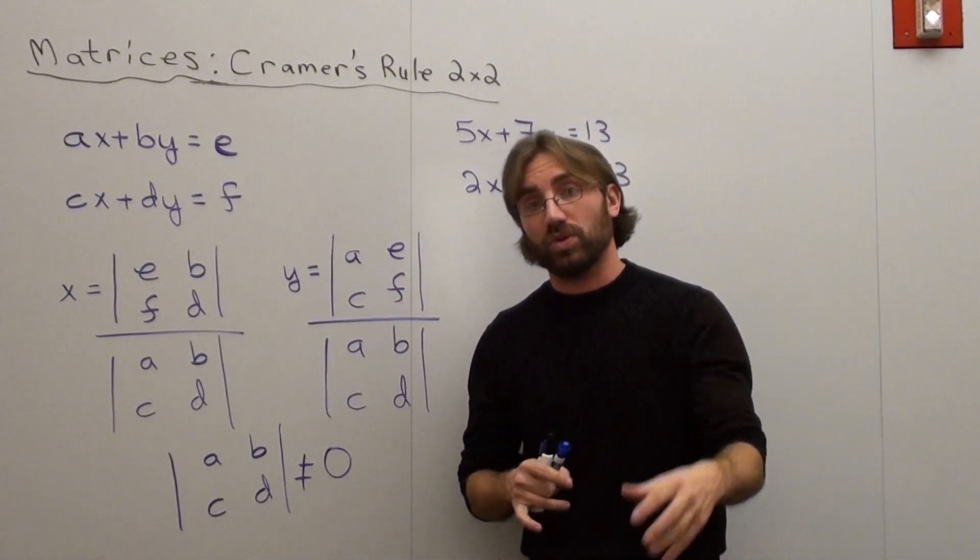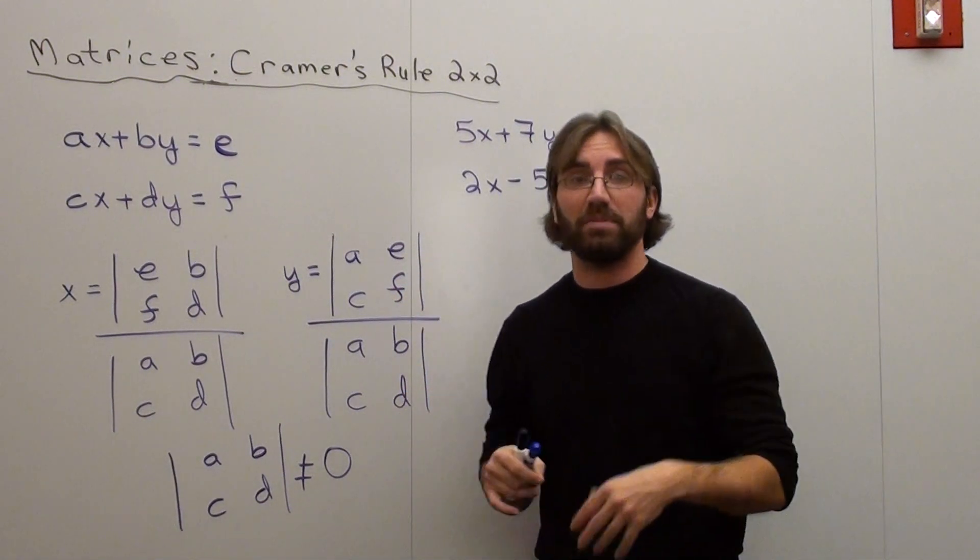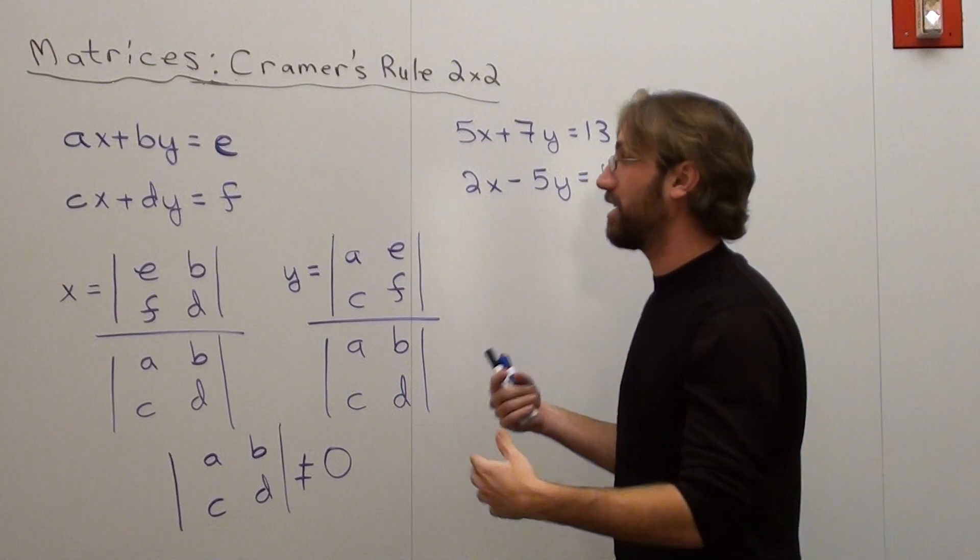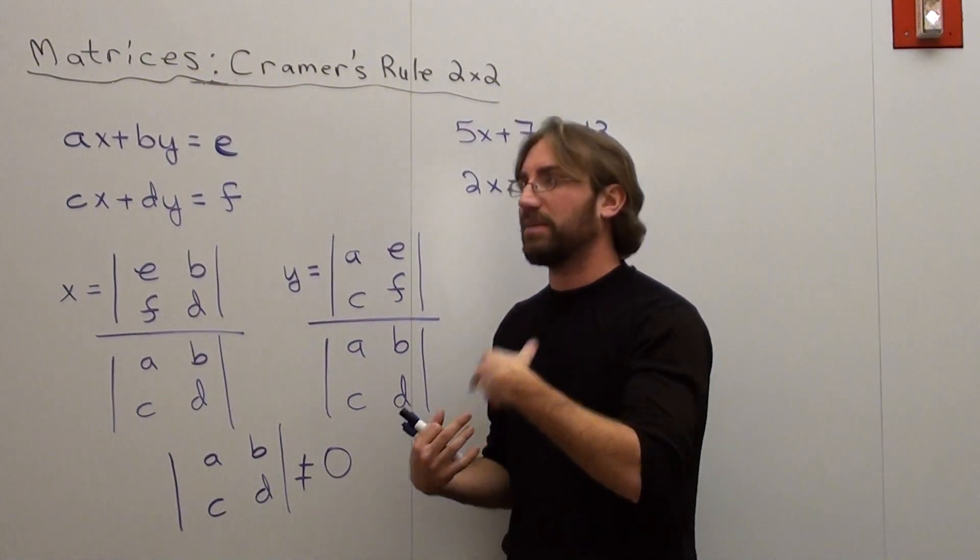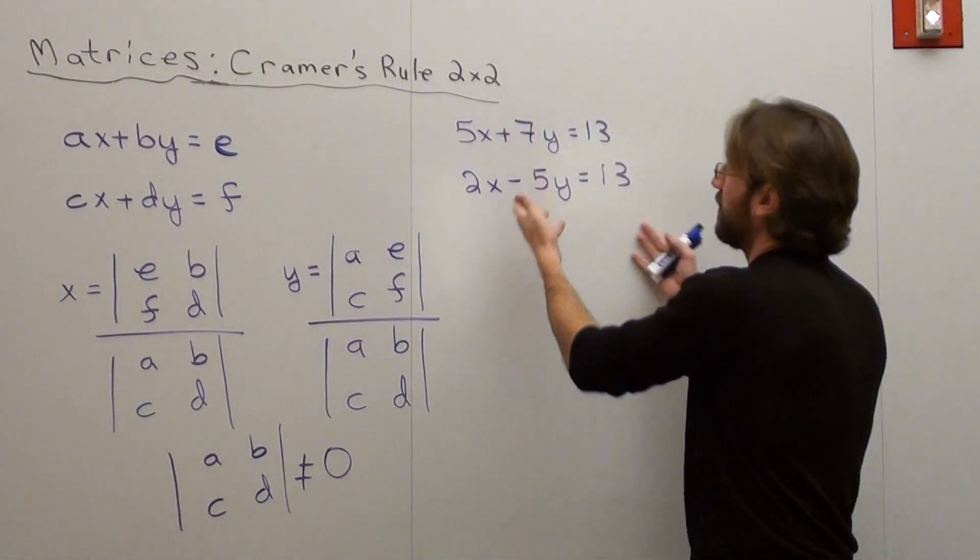Hello. We're going to be working with Cramer's rule on two by two matrices, and basically all that means is I'm going to figure out what my x and my y are on a system of linear equations.